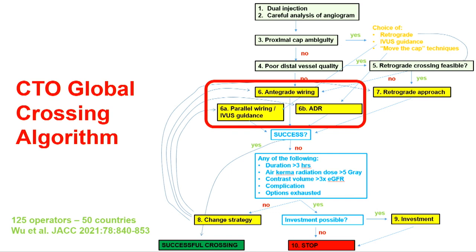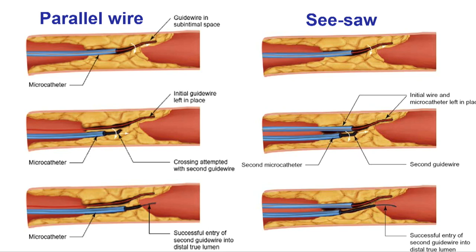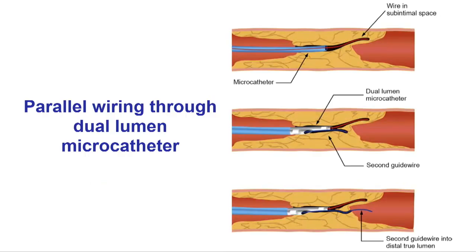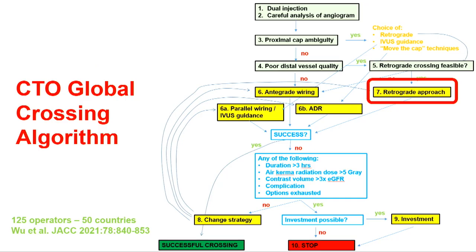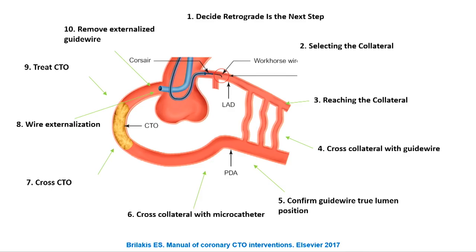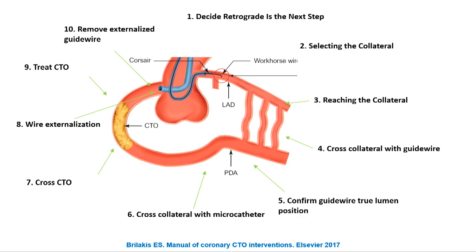If antegrade wiring doesn't work, options include parallel wiring or ADR. ADR with the Stingray system for subintimal or extraplaque wire position and stingray-based re-entry has been very useful. Moving to the retrograde approach — it is a powerful technique, and for many highly complex cases it is often the only way. To be a high-end experienced operator you need retrograde in your skill set, along with the ability to manage potential complications. Step eight is changing strategy — a sign of experience is knowing when to stop doing something; the faster you realize it's not working, the better for radiation, contrast, and outcomes.